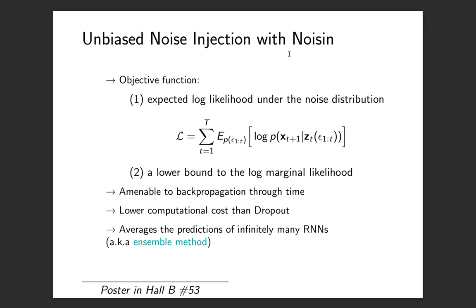The objective optimized by NOISIN is simply the expected log likelihood under the noise. This is a summation across time steps of the expectation under the noise of the log likelihood conditional on the noisy hidden state. This is a trivial Jensen lower bound on the log marginal likelihood. It is amenable to backpropagation through time and has low computational cost like dropout. One interesting interpretation is that at each time step you are averaging the predictions of multiple RNNs. This is known in the literature as ensemble method and is known to have a regularization effect.